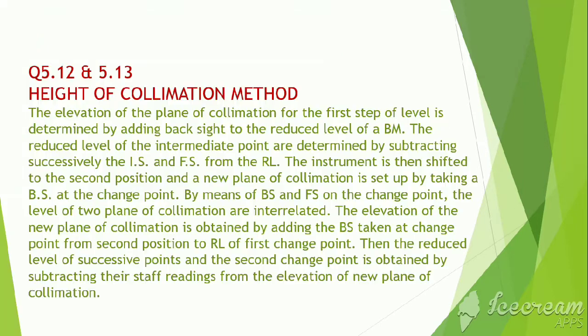Now, let's move on to leveling. Leveling is done by two methods: height of collimation method and rise and fall method. In height of collimation method, the elevation of the plane of collimation for the first setup of level is determined by adding backside to the reduced level of a benchmark. The reduced level of the intermediate points are determined by subtracting successively the intermediate side and foresight from the reduced level.